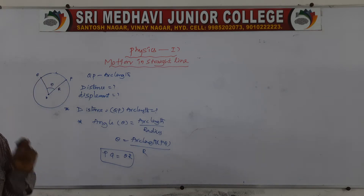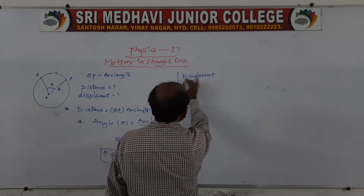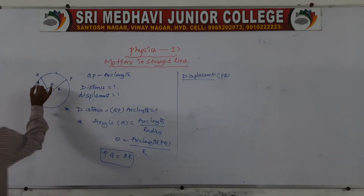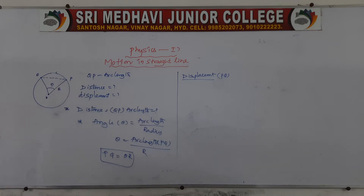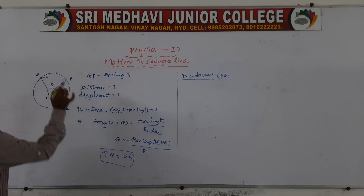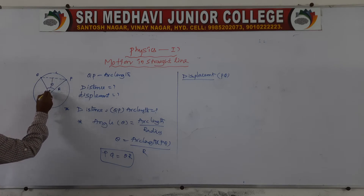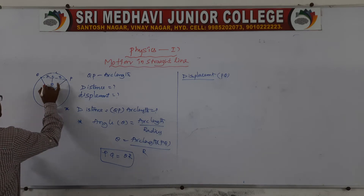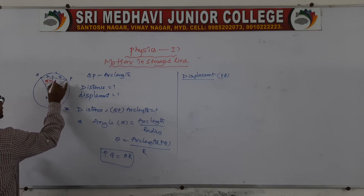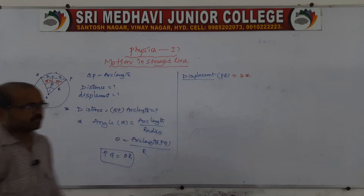For displacement, PQ is the shortest path — a straight line drawn from P to Q. We don't know this length directly, so we drop a perpendicular from the center O to the chord PQ, meeting it at point C. This splits the angle theta into two equal halves of theta/2 each, and the half-chord length is x, so displacement PQ = 2x.